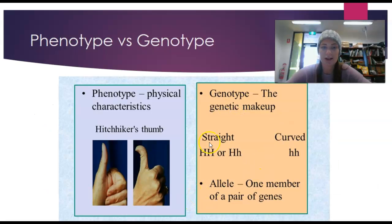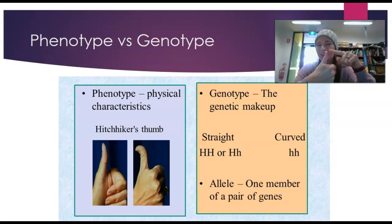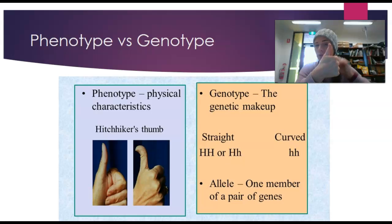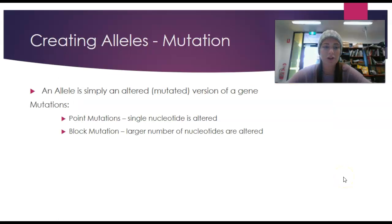Another example is the hitchhiker's thumb, which you can demonstrate for yourself. Hitchhiker's thumb - where the thumb bends back just a little bit further - is controlled at one gene with two alleles: either the allele for a straight thumb or the allele for the curved hitchhiker's thumb. The pattern of inheritance is the same as for albinism, where the curved hitchhiker's thumb is the recessive allele.